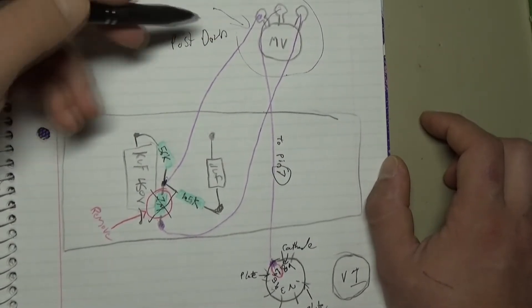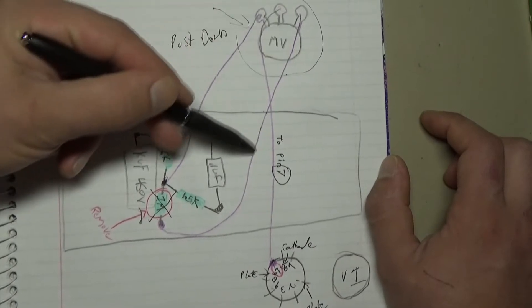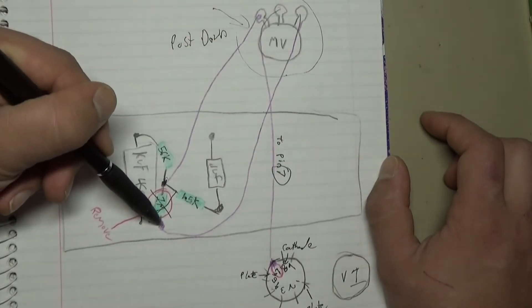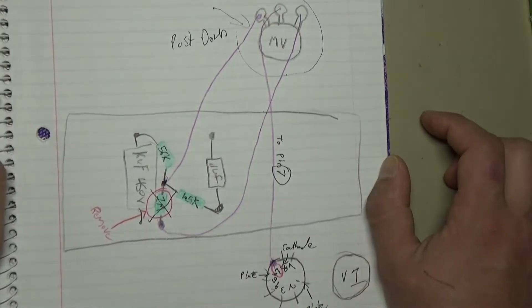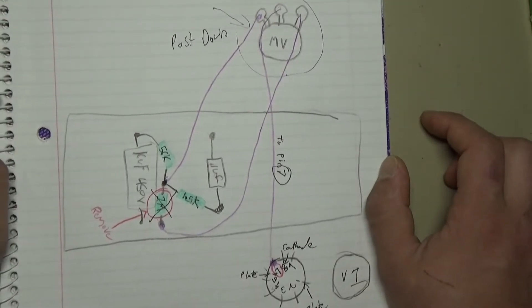So I just want you to know that the third is going to go to the other end where the grid leak resistor was, right here. So that's all there is to it.